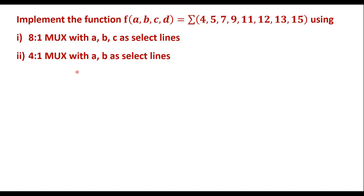In this video, I will consider one example on implementation of a given boolean function using an 8-to-1 MUX and a 4-to-1 MUX. The function f(a, b, c, d) has given minterm values. We are supposed to implement this using an 8-to-1 MUX with A, B, C as select lines, and a 4-to-1 MUX with A, B as select lines.